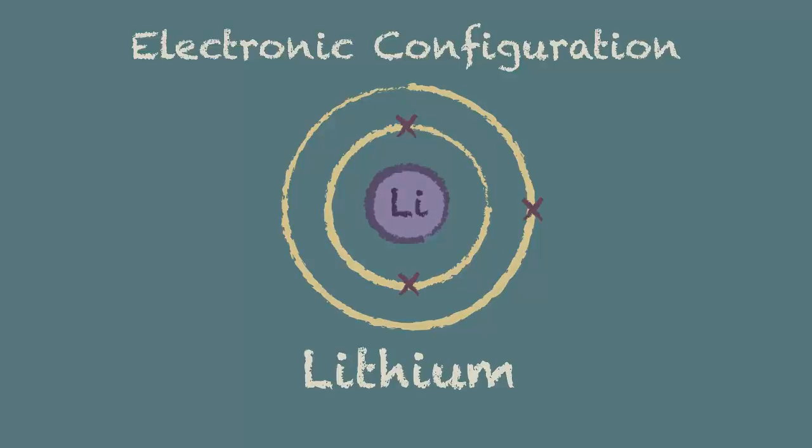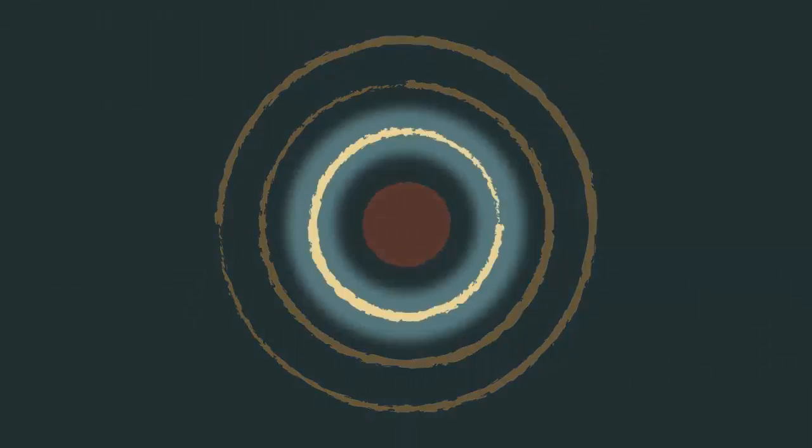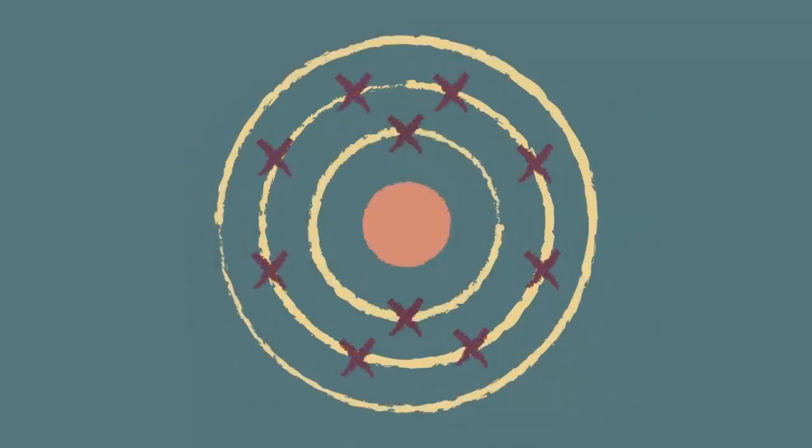The same process of filling up shells applies to larger atoms. You always start with the lowest available shell, and whenever a shell is full, the next electron to be added goes into the next shell. And that's pretty much it. All you need to know is how many electrons can occupy each shell. And at this level, you only need to know the rules for the first twenty elements.